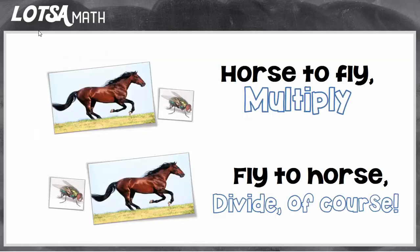It goes like this: horse to fly, multiply; fly to horse, divide, of course. So how this trick works is you have to think about the units you're converting as one being bigger and the other being smaller. The horse is going to represent the bigger unit, and the fly is going to represent the smaller unit.